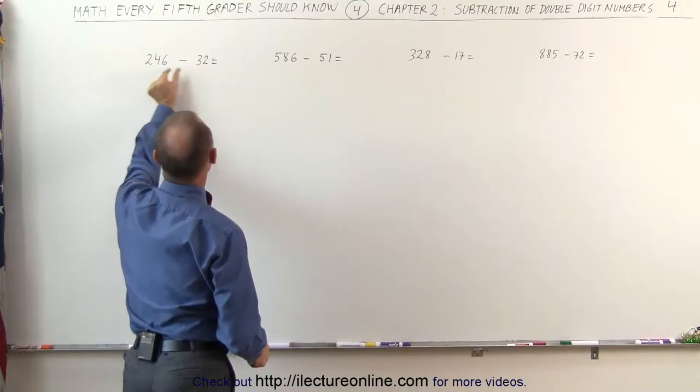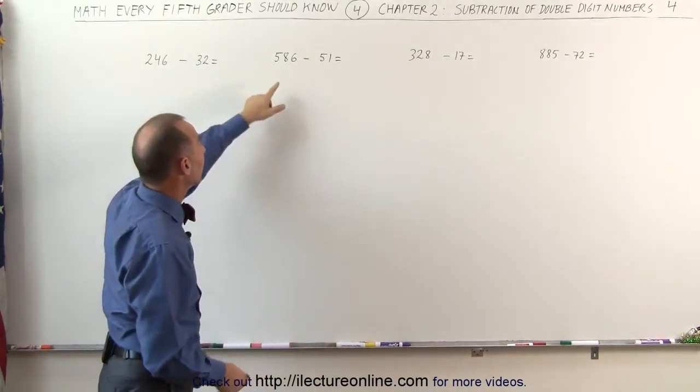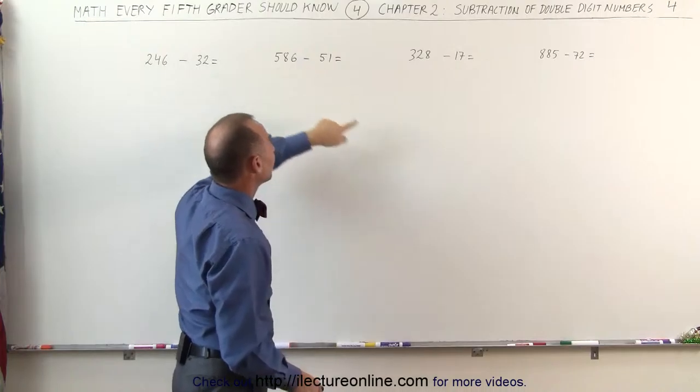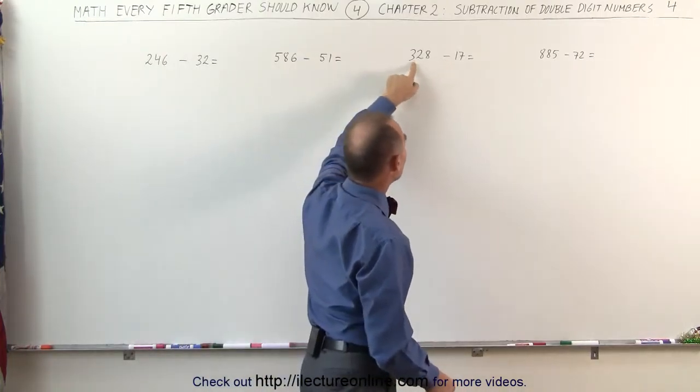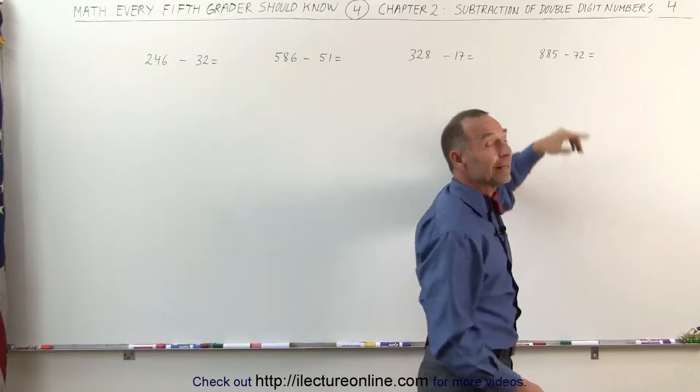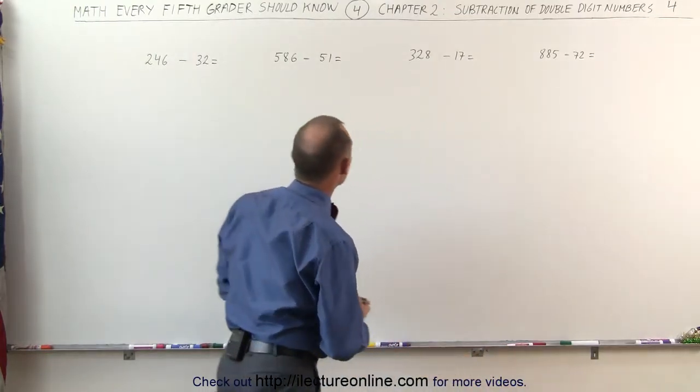Because when we subtract this from this, we still have a number that will be greater than 200, we still will get a number that's greater than 500, we still get a number that's greater than 300, and we still will get a number that's greater than 800. So we don't have to change the first number.